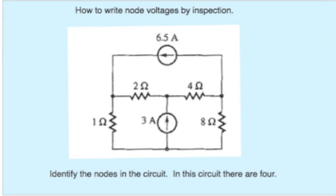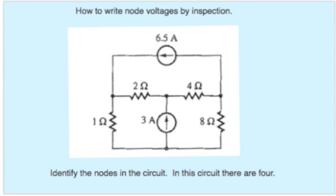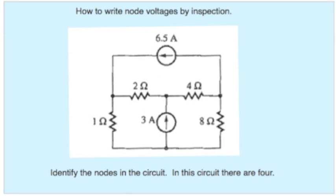We want to describe an algorithm by which one may write down the node voltage equations just by looking at the circuit and doing that directly without going through the separate constraints of KCL, element constraints, collecting terms, and so forth. The algorithm works particularly well for circuits consisting of resistors and current sources such as the circuit we see here. And let's demonstrate it with this particular circuit.